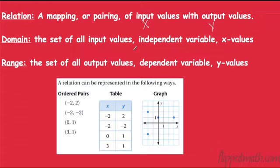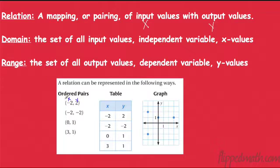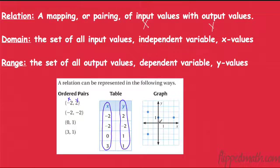If I looked at a graph, the domain would be any possible x. The range is just the opposite — it's the set of all output values. It's a dependent variable, the y value. So anything that talks about y values is the range. Looking at this example, we have ordered pairs with an x and a y. Our domain would be all the x values, and our range would be all the y values — whether in ordered pairs, a table, or a graph.